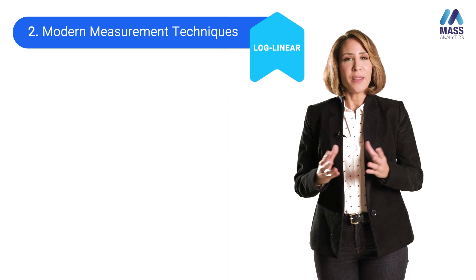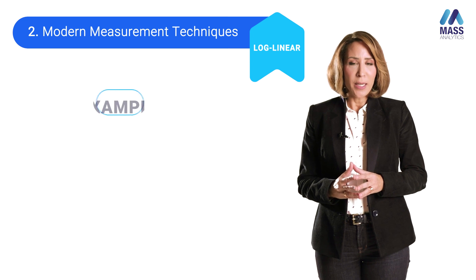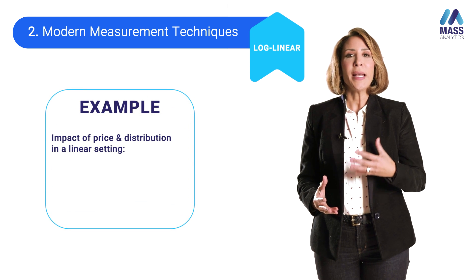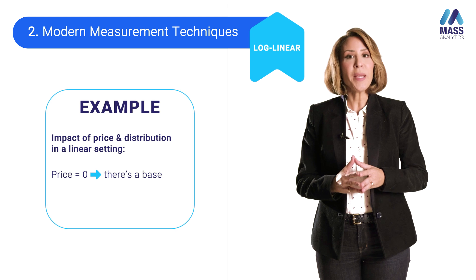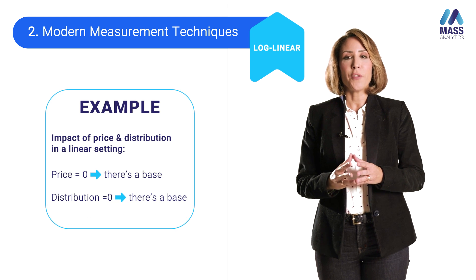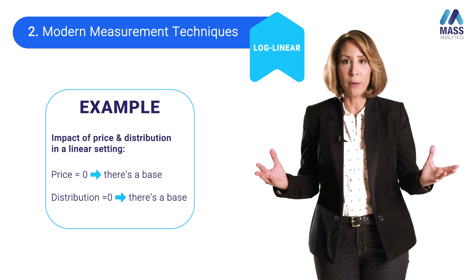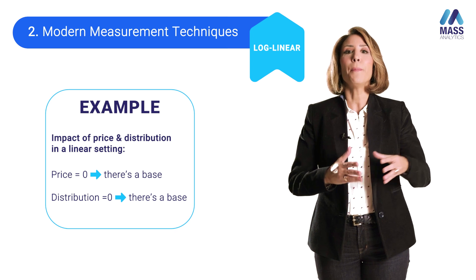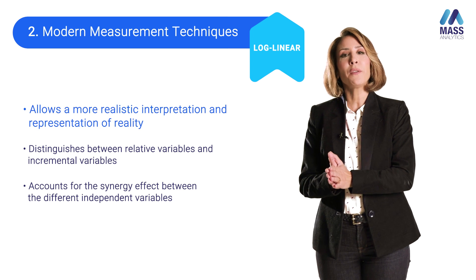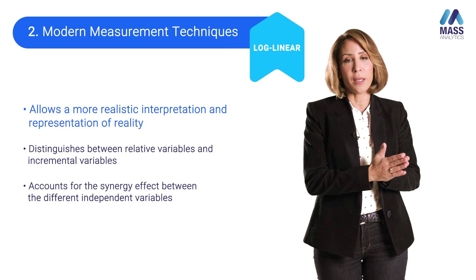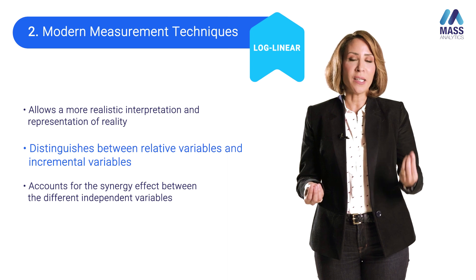Last but not least, log-linear. This technique is much more realistic than its linear counterpart. In a linear setting, if the price is equal to zero, there is still a base; if distribution is equal to zero, there is also still a base — meaning even if your product is not distributed anywhere, the model says sales have a base. This is not realistic, and moving to a log-linear setting overcomes this challenge by integrating the notion of relative and incremental variables.